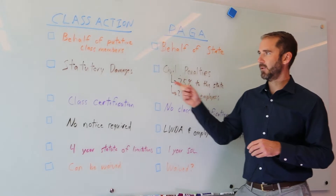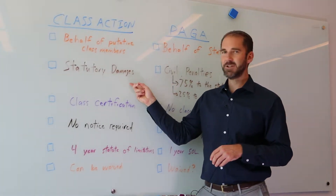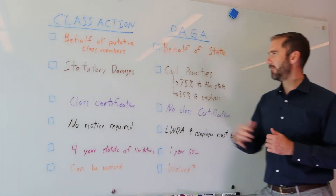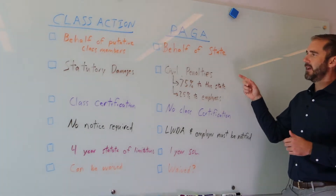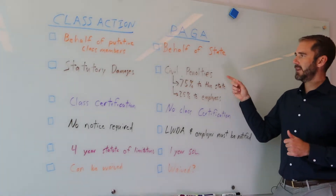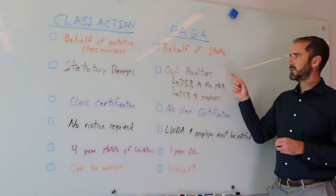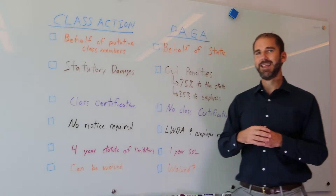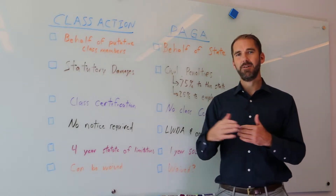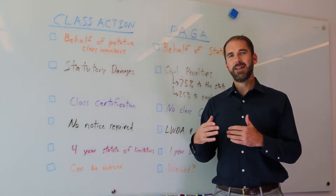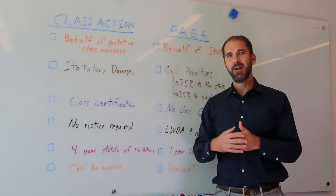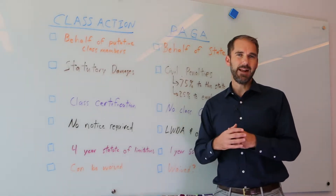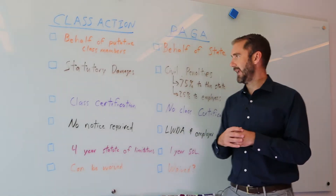In a class action, employees can recover statutory damages and all damages. Under a PAGA claim, the employee is limited to civil penalties — they can only recover penalties that the state could have recovered if the state brought a claim against the employer in an enforcement action.